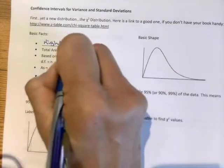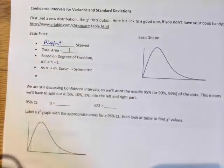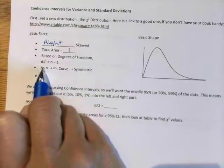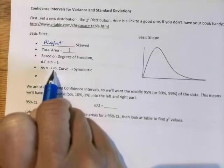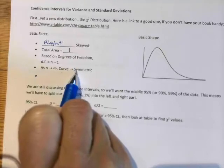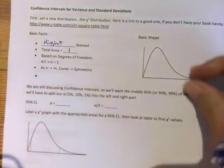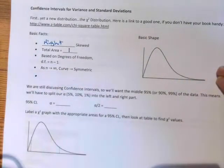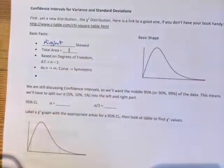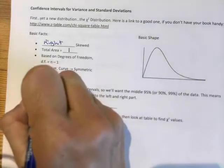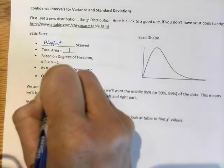The total area is 1. Based on degrees of freedom, as n gets big, so as your sample size gets big, our curve becomes more and more symmetric. So it starts kind of getting pulled to the right so that it looks more like a normal distribution. And finally, all chi-square values are positive.